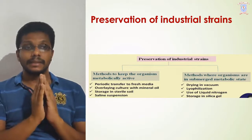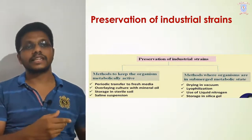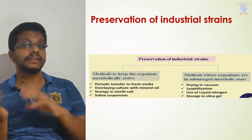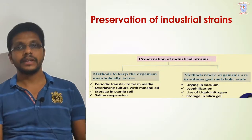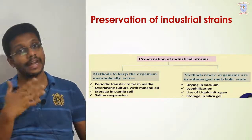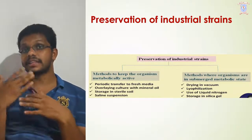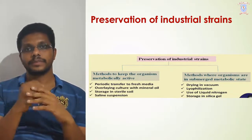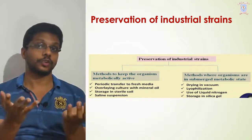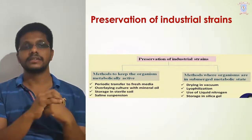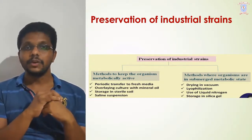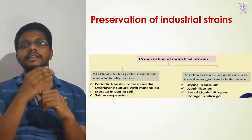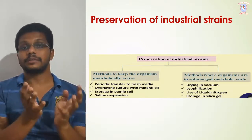Industrial strain preservation methods are broadly classified into two categories. In the first category, we store the microorganism in a metabolically active state. In the second, we preserve the microorganism in a suspended or submerged metabolic state. In the metabolically active state, the microorganism is metabolically active, has all metabolic pathways, is dividing and reproducing, but we can slow down the rate of growth. In the suspended or submerged metabolic state, we temporarily pause the microbial metabolism — it is very very slow and reproduction may not happen.